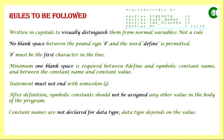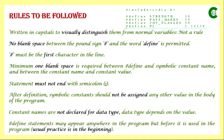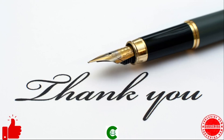Symbolic constant names are not data-typed explicitly — if we assign 30 as a value, the compiler understands the data type is integer; if we assign 3.14, the compiler understands it is float. After definition, a symbolic constant should not be assigned any other value in the body of the program. #define statements may appear anywhere in the program, but the usual practice is to declare them at the beginning, before the main function, typically between the header files and the main function. That's all about symbolic constants; in the next class we will be learning something new.